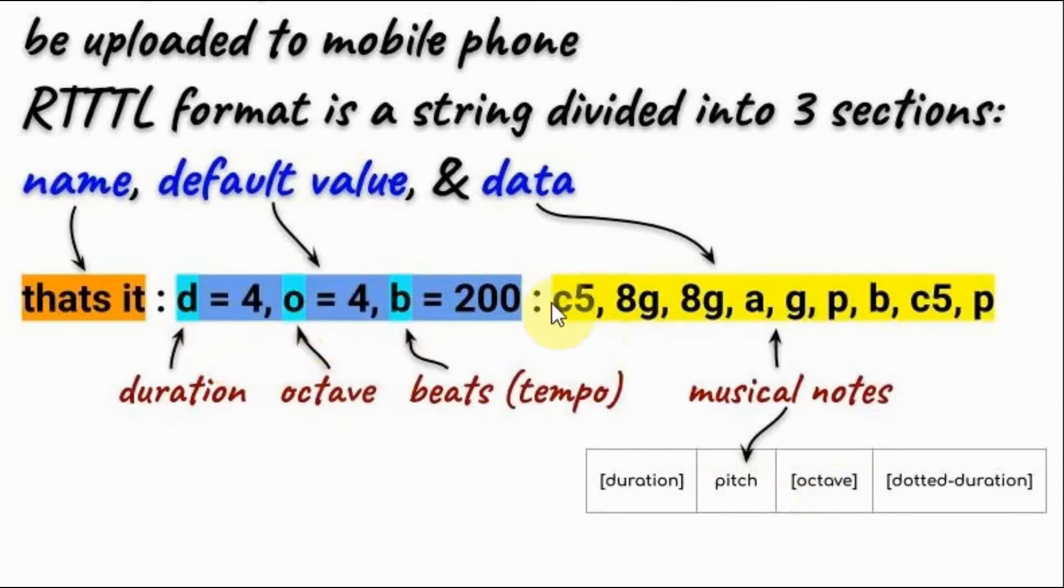For example, let's have a look at the first note here. We read the first note as: the duration is not mentioned so we take the default 4, the pitch is C, and the octave is 5.